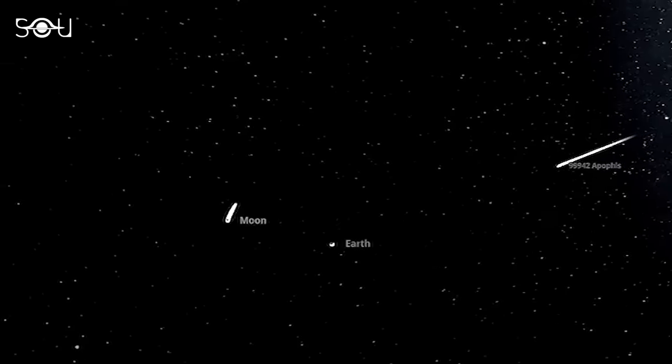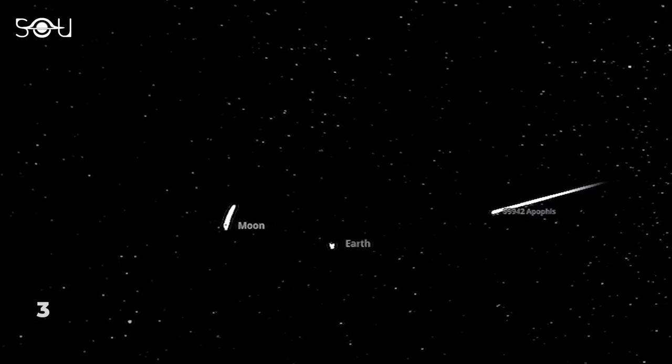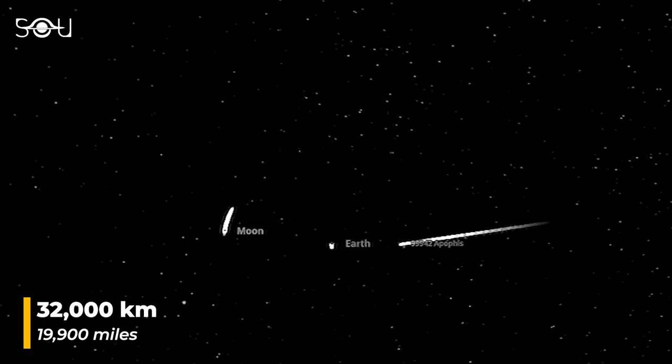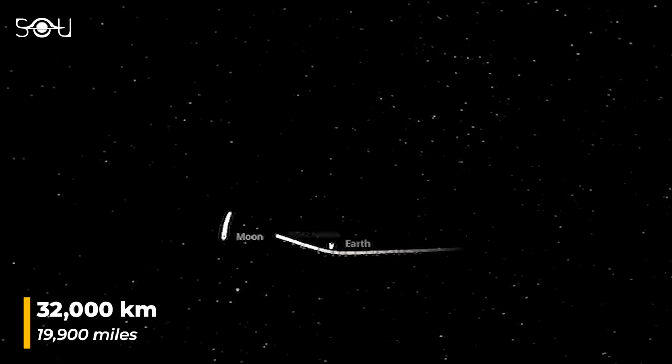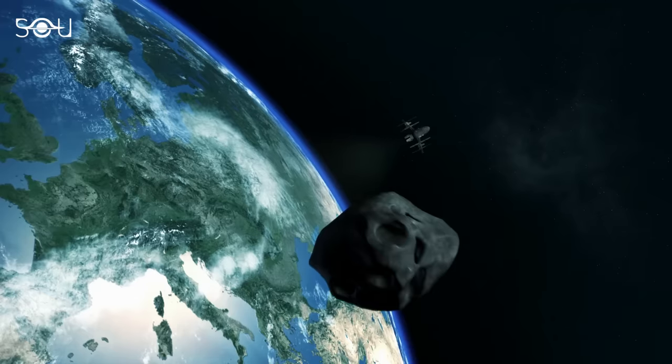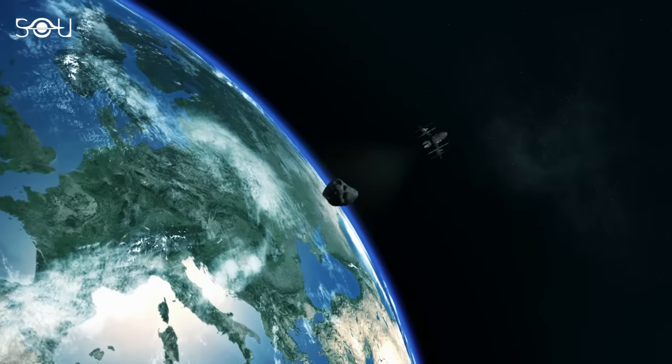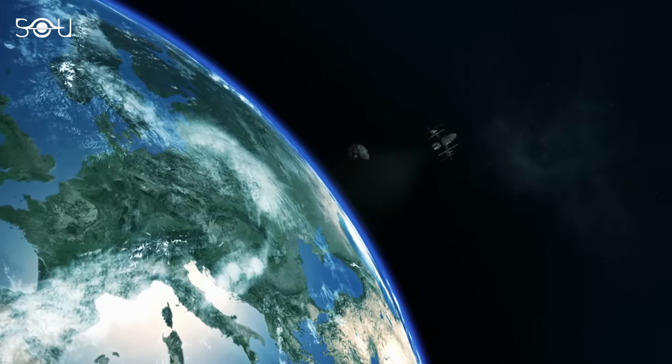In 2029, it will approach our planet at a distance of just 32,000 kilometers, or about 19,900 miles, passing below the orbits of geostationary satellites and shining as brightly as a satellite itself.